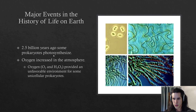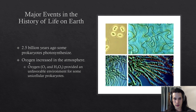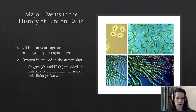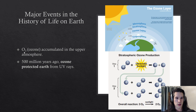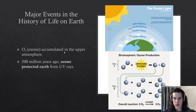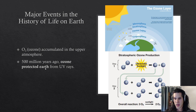Some prokaryotes photosynthesize, and as a result of that massive boom in photosynthesizers, there was an accumulation of oxygen in the atmosphere — along with hydroxides — which provided an unfavorable environment for some unicellular prokaryotes. Eventually a bunch of O3 — ozone — accumulated in the upper atmosphere, and ozone has the capacity to protect Earth from ultraviolet rays.